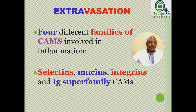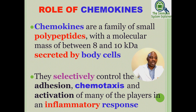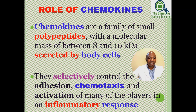There are four different families of cell adhesion molecules involved in inflammation: selectins, mucins, integrins, and immunoglobulin superfamily cell adhesion molecules. We also have a group of cytokines called chemokines. Chemokines are a family of small polypeptides with a molecular mass of between 8 and 10 kilodaltons, created by body cells. They selectively control adhesion, chemotaxis, and activation of many of the players of an inflammatory response.